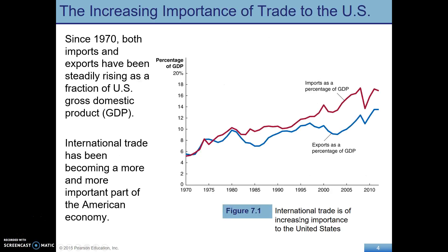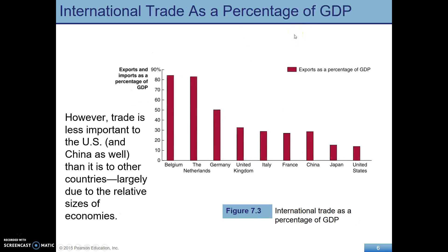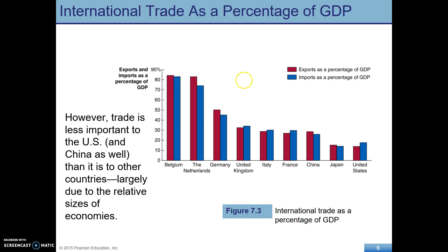Looking at the U.S., we have imports as a percentage of GDP and exports as a percentage of GDP, and both of those are trending upward over time. China is the world's leading exporter as of 2012. Notice that some smaller countries — especially in Europe — have trade as a bigger part of their economy than the United States, which is large, geographically diverse, and rich in natural resources, so trade plays a smaller part in U.S. GDP.